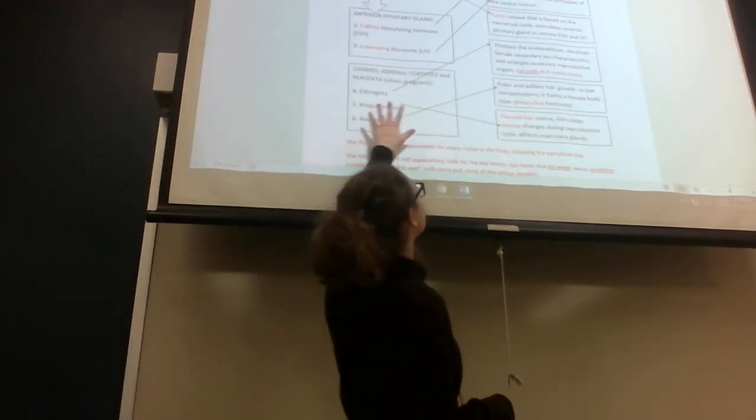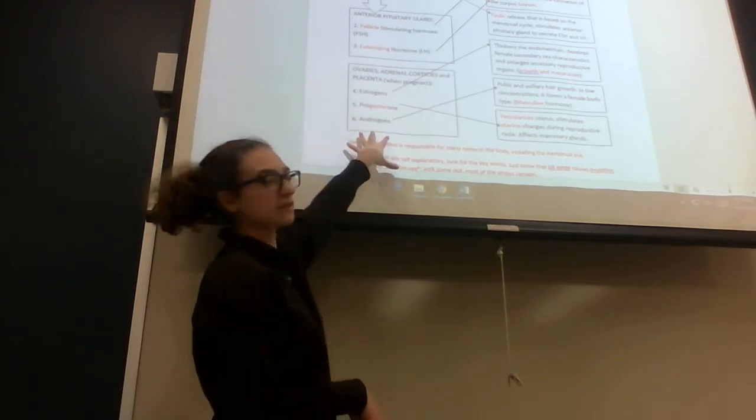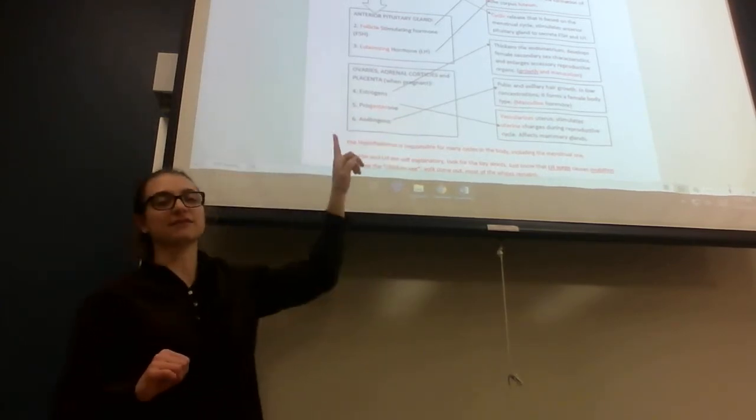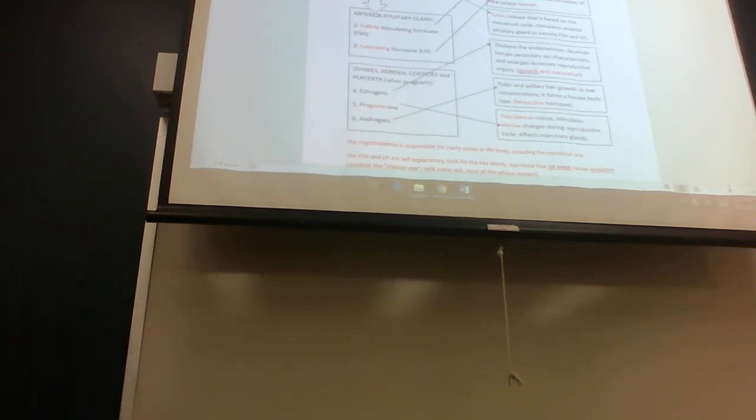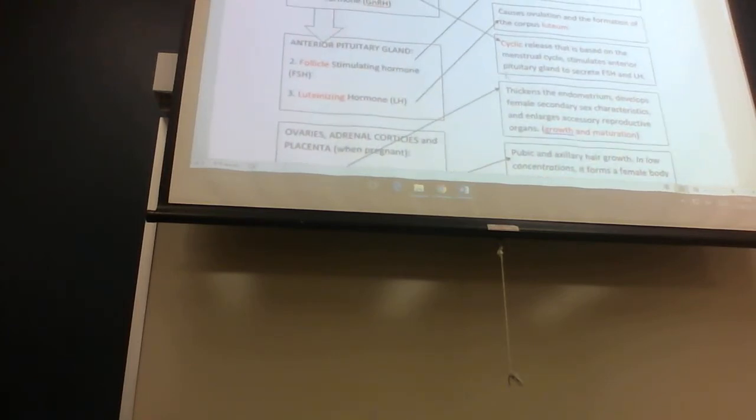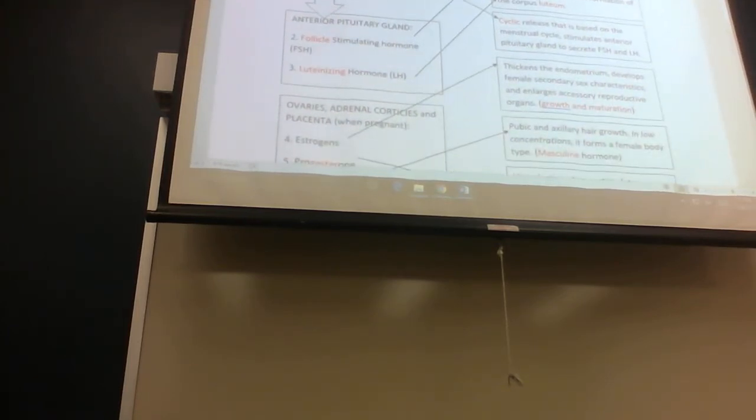On the right side, these are all definitions. This is the process of which hormones are released. The hypothalamus will release gonadotropin-releasing hormone to the anterior pituitary gland. Gonad means sex organ. This is a cyclic release that is based on the menstrual cycle in the female.